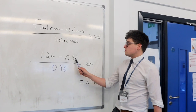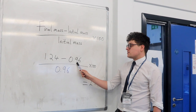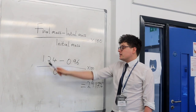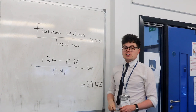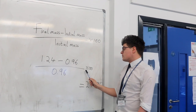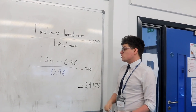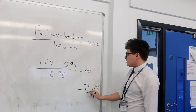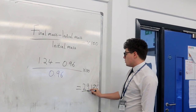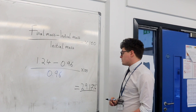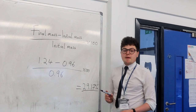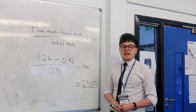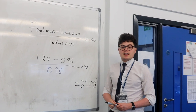If your initial mass was 0.96 grams and your final mass was 1.24 grams, it is put into the equation as shown. This number is then multiplied by 100 to work it out as a percentage. In this example, the percentage increase was 29.17%. Remember, if this is a negative number, there has been a percentage decrease in mass.